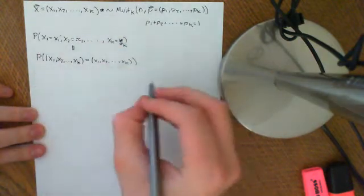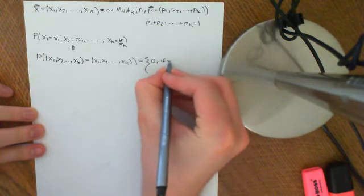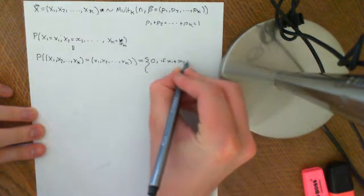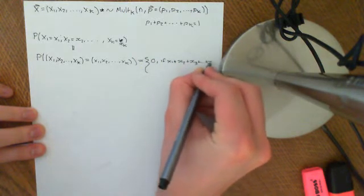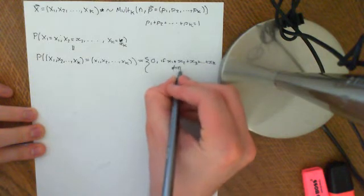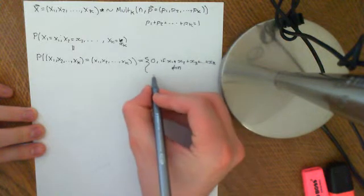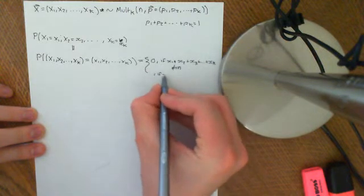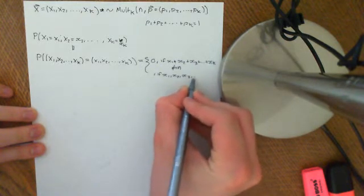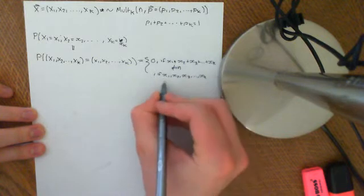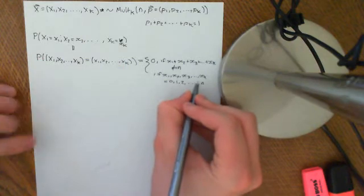If not, if x1, so I'll just put that, this is equal to 0 instantly, if x1 plus x2 plus x3 all the way on, plus all the way up to xk, does not equal n, and it's also equal to 0, if any of them is not an integer value, so if x1, x2, x3, let's say all the way up to xk, are not equal to 0, 1, 2, it has to be one of those numbers.